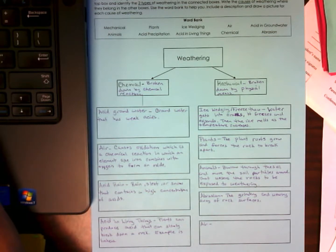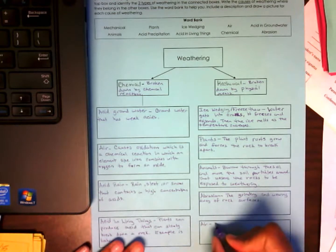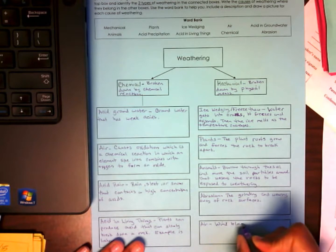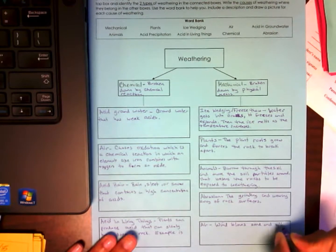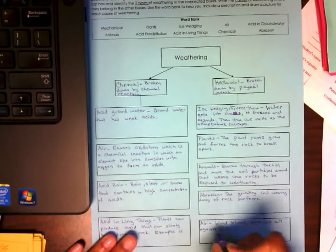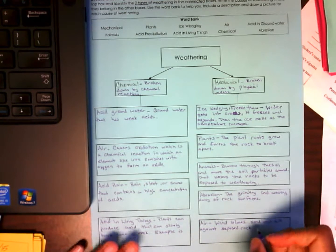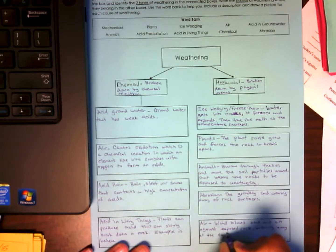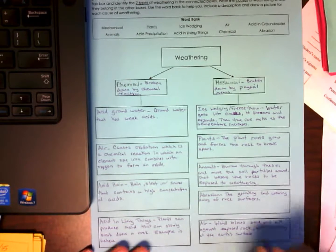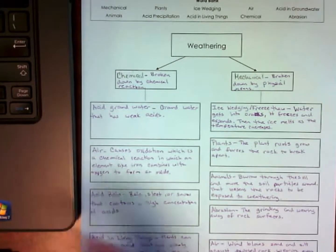And then the last one is air. So again, with this one, the wind blows sand and silt against rock and it wears away the rock surface. So the wind blows sand and silt against exposed rock. Wearing away at the surface.